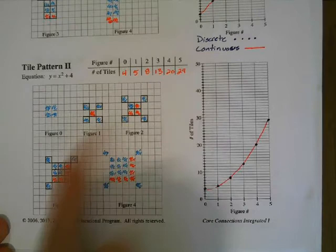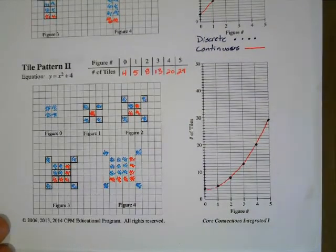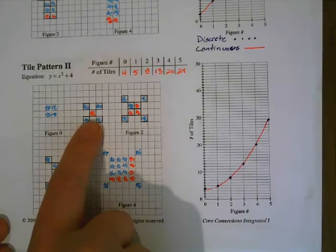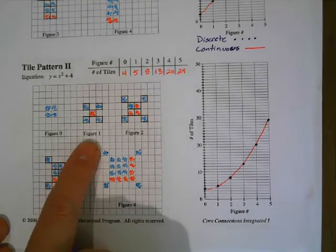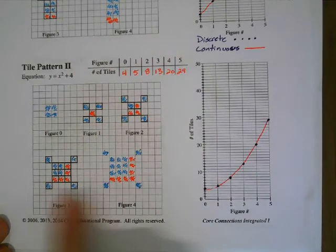And you can also look at it as just a growth of the square in the middle. The square is getting bigger. The length of the square is equal to the figure number. This is a one by one square, two by two square, three by three square, four by four square.